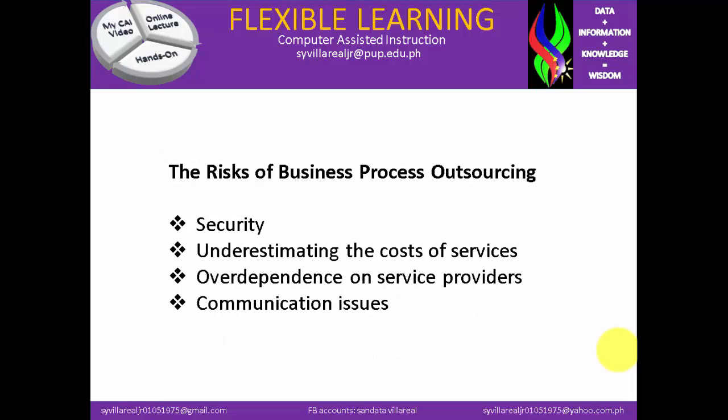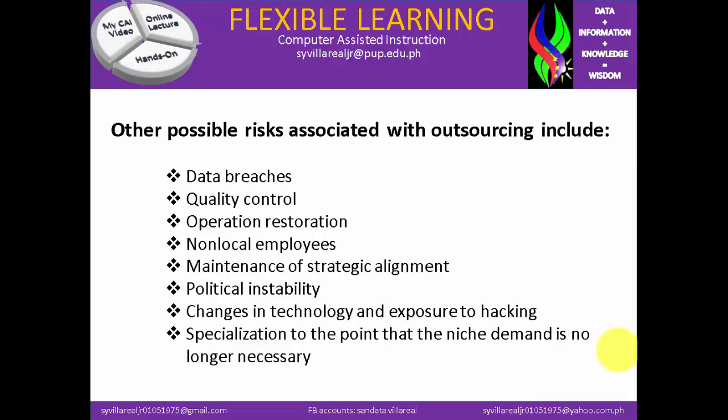What are the risks of business process outsourcing? We are risking ourselves in terms of security — through information and through people. The second is underestimating the cost of services. The third is over-dependence on service providers. And the last is communication issues. Other possible risks associated with outsourcing include data breaches, quality control, operation restoration, non-local employees, maintenance of strategic alignment, political instability, changes in technology and exposure to hacking, and specialization to the point that the niche demand is no longer necessary.